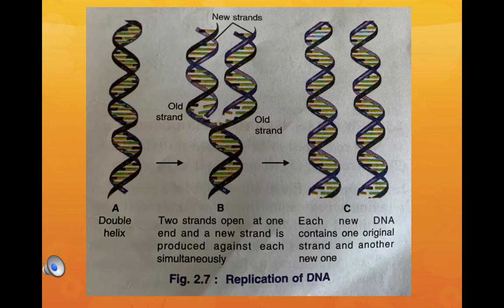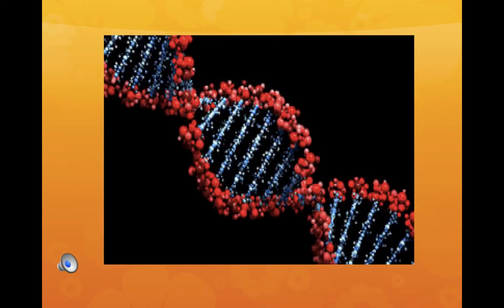DNA replication takes place during the interphase of the cell cycle, also called the resting phase. Each DNA molecule duplicates in readiness for equal distribution in the two daughter cells formed at the end of mitotic cell division. For replication, the DNA double helix opens at one end, making the two strands free to which new strands begin to form, and the process continues for the whole length of the DNA. The entire replication is a very complex process. Genes are a specific sequence of nucleotides on a chromosome that encode particular proteins, expressed as particular features of the body.